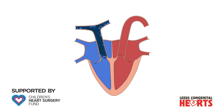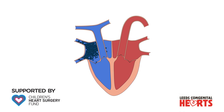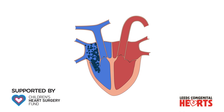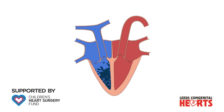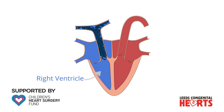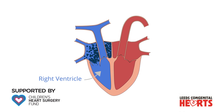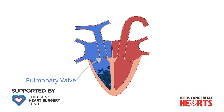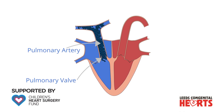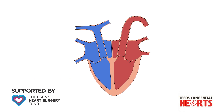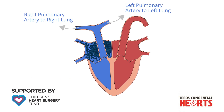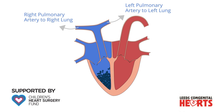The first of these is an obstruction to blood being pumped from the heart to the lungs. The part of the heart that pumps blood to the lungs is called the right ventricle. Blood passes from the right ventricle through the pulmonary valve to the pulmonary artery, which then divides into right and left pulmonary arteries to take blood to the right and left lungs.